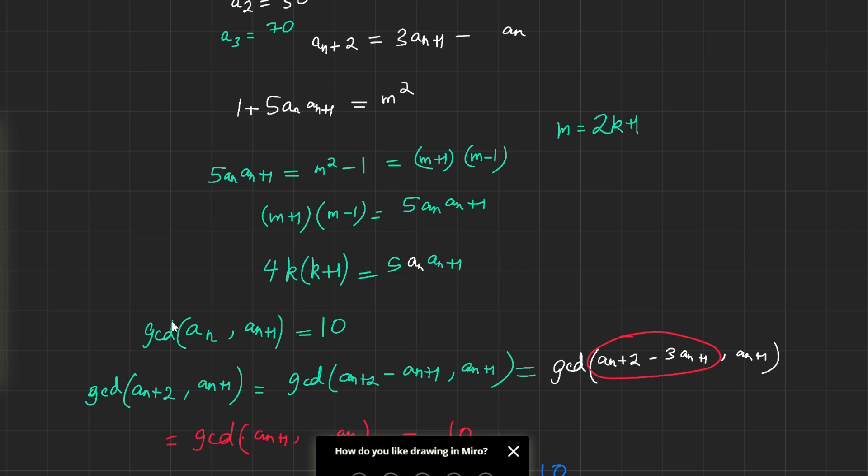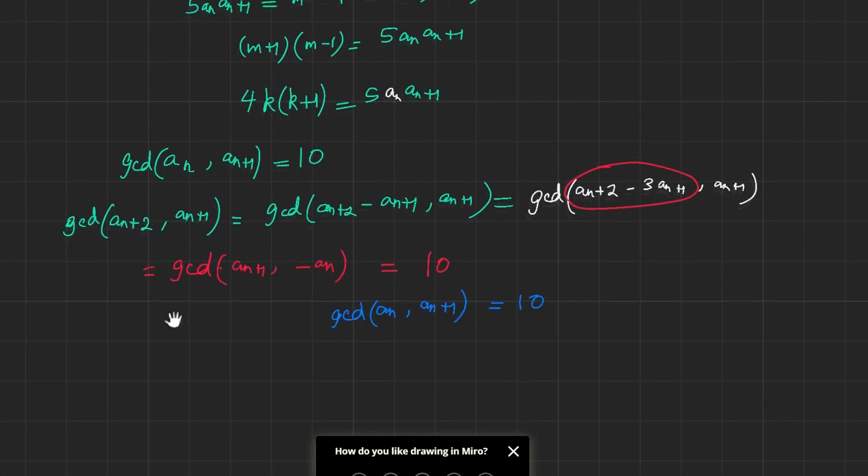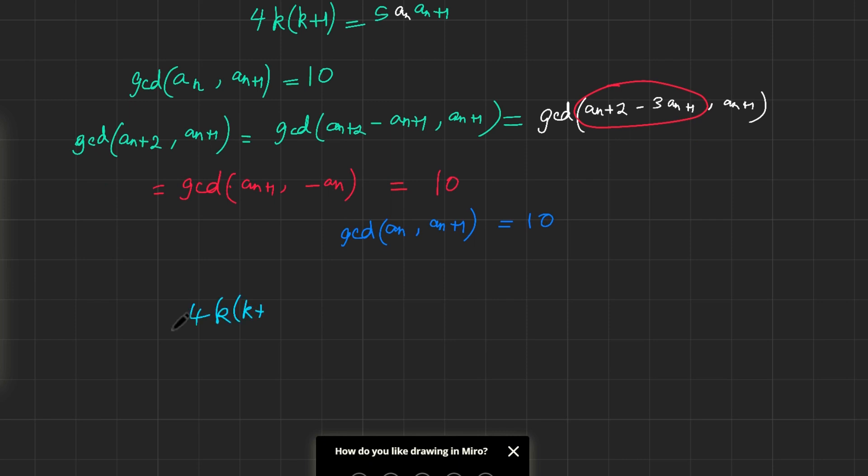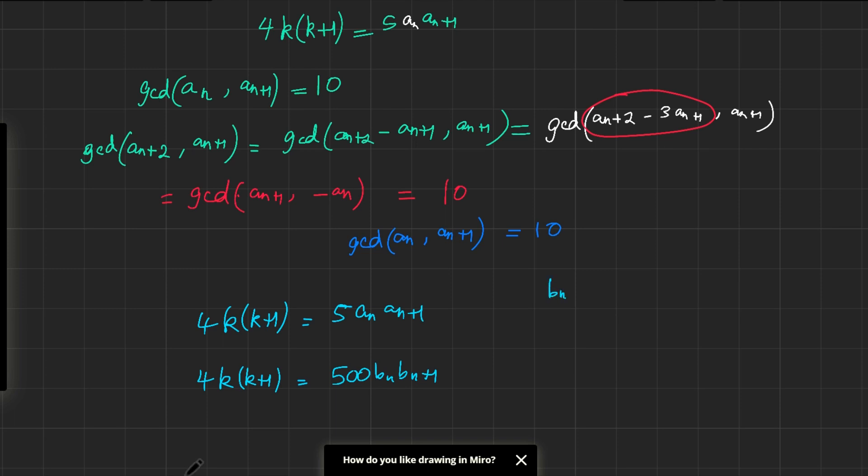Okay, so whenever you do have a greatest common divisor of 10, it's usually smart to bring in a substitution. So let's just rewrite our equation here. You have 4k(k+1) equals 5aₙaₙ₊₁. And we know that the GCD of them is 10. So let me just let there be a bₙ, a sequence bₙ, that is equal to aₙ over 10. Now, once we do actually substitute it right into this equation, we get 4k(k+1) equals 500bₙbₙ₊₁.